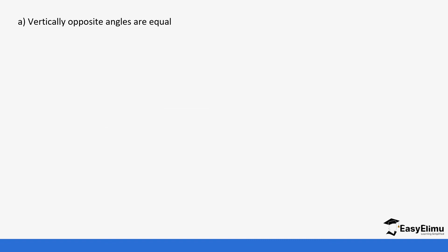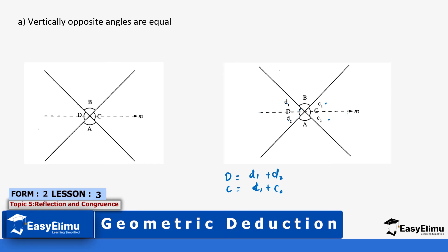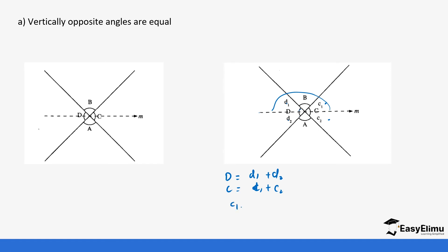First of all, we will start with vertically opposite angles are equal. If we have these two vertically opposite angles, let's make the deductions and conclusions. We know that D equals D1 plus D2, and C equals C1 plus C2. So angle D is made up of D1 plus D2, and angle C is made up of C1 and C2. When you look at these angles on a straight line, angles on a straight line add up to 180. So if we take C1 plus B plus D1, we get 180.